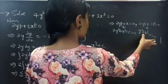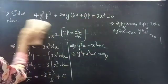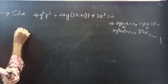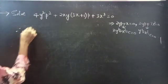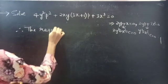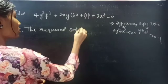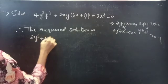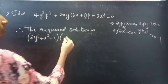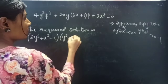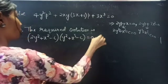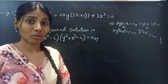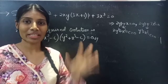The solution for the second factor is y² + x³ − c = 0. The combined form of these two solutions is the solution of the given differential equation. Therefore, the required solution is (2y² + x² − c)(y² + x³ − c) = 0. Hope you understand. We will see you in the next video. Bye-bye.